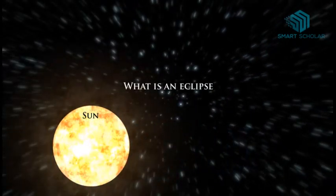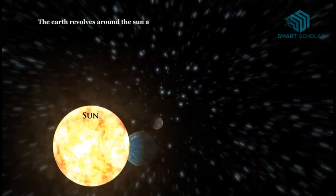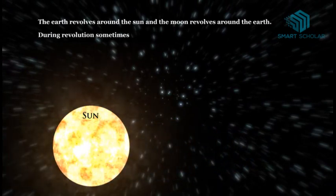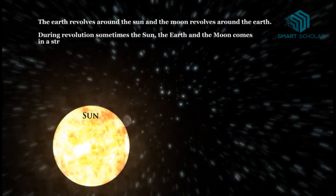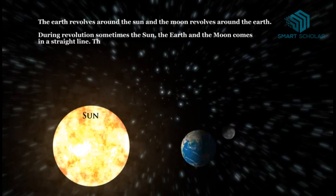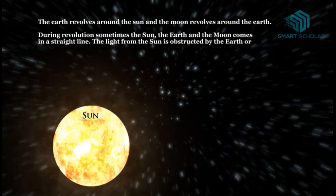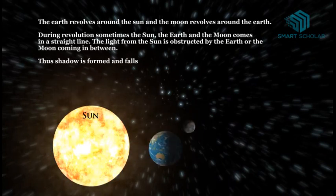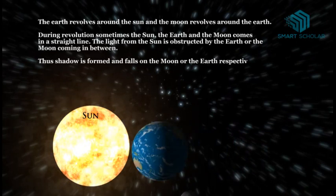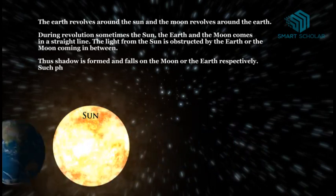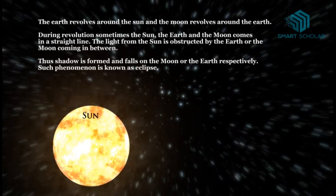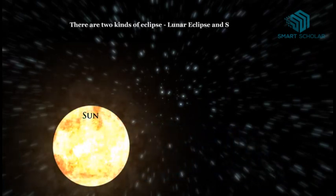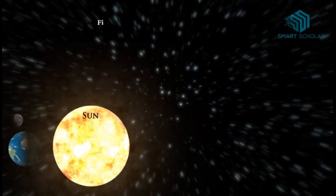What is an eclipse? The earth revolves around the Sun and the moon revolves around the earth. During revolution, sometimes the Sun, the earth, and the moon come in a straight line. The light from the Sun is obstructed by the earth or the moon coming in between. Thus a shadow is formed and falls on the moon or the earth respectively. Such a phenomenon is called an eclipse. There are two kinds of eclipse: lunar eclipse and solar eclipse.